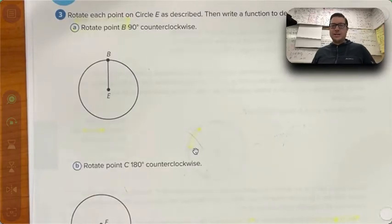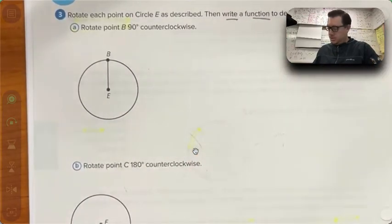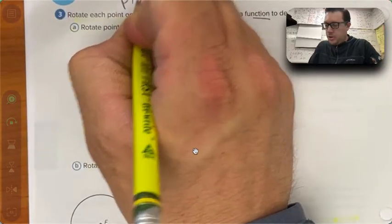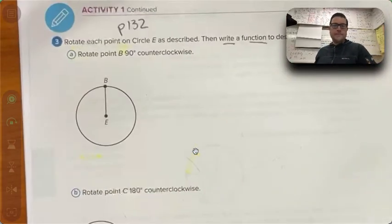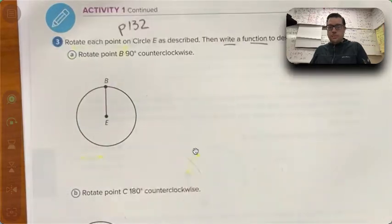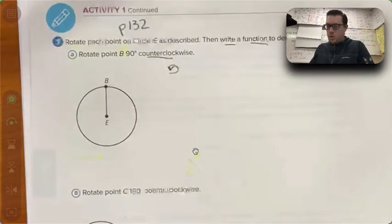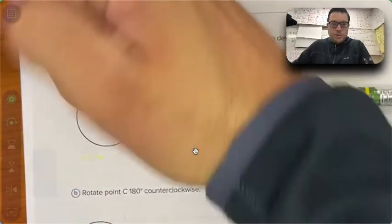Now rotate each point on the circle as described, then write a function to describe the rotation. This is page 132. Now the way that we can handle this with a 90 degree rotation is actually to use a protractor. And because it says counterclockwise, that means this way going around the shape.